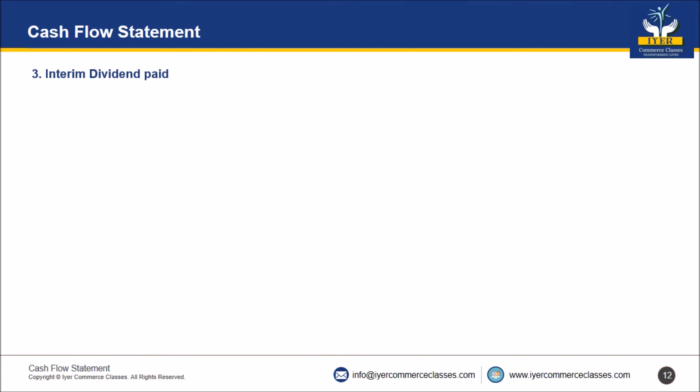Next, interim dividend paid. Entry is very simple: profit and loss account debit to cash account. Profit and loss account debit will go to operating activity; to cash will go to financing activity.